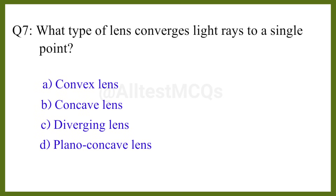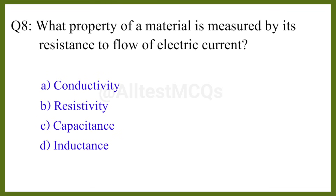Question number seven: What type of lens converges light rays to a single point? The correct answer is option A: convex lens. Question number eight: What property of a material is measured by its resistance to the flow of electric current? The correct answer is option B: resistivity.